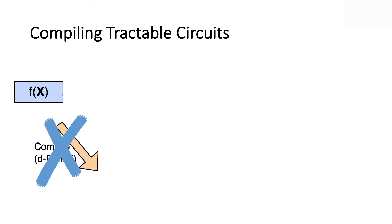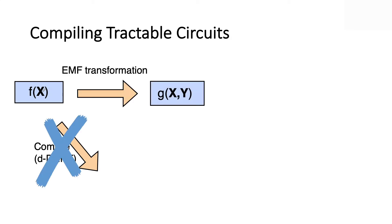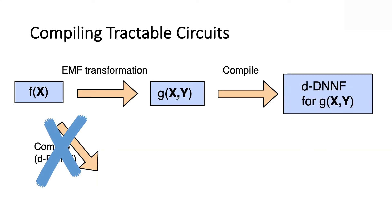This technique of adding variables turns out to be significant both practically and theoretically. You have an input CNF on these variables, and for some of these inputs there is no deterministic and decomposable circuit that is compact — every such circuit will blow up exponentially. But if you take that input formula and add auxiliary variables, getting an extended formula, now it's compilable. You can find for this extended formula a poly-sized deterministic DNNF, even though you couldn't for the original.